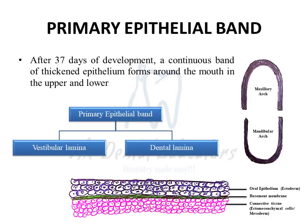The primary epithelial band gives rise to two different structures: the vestibular lamina and the dental lamina. The vestibular lamina helps in the formation of the vestibule — the space between the teeth and the cheek. The part of the epithelium involved in forming the vestibule is known as the vestibular lamina, while the part involved in formation of the tooth is referred to as the dental lamina.